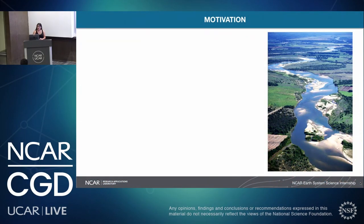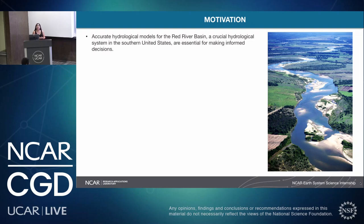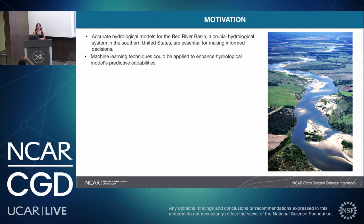I'm going to start with a motivation of why we want to make hydrological models. We want to develop and calibrate a hydrological model for the Red River Basin. There is a really crucial hydrological system in the southern United States, and it is essential for making informed decisions regarding different key factors, like reservoir operations, stream flows, and societal water needs. Machine learning techniques could be applied to enhance hydrological model performance.